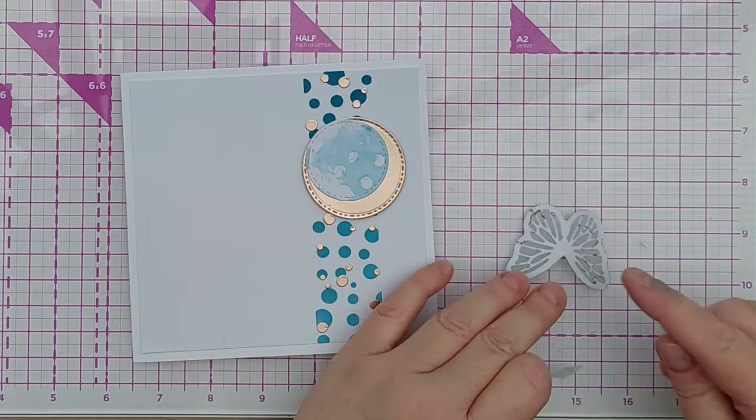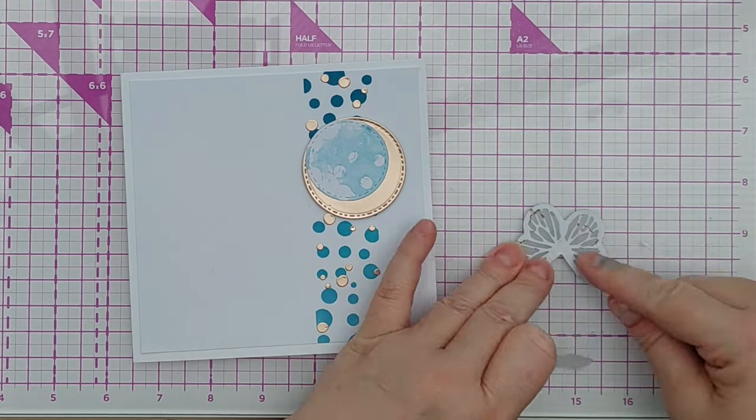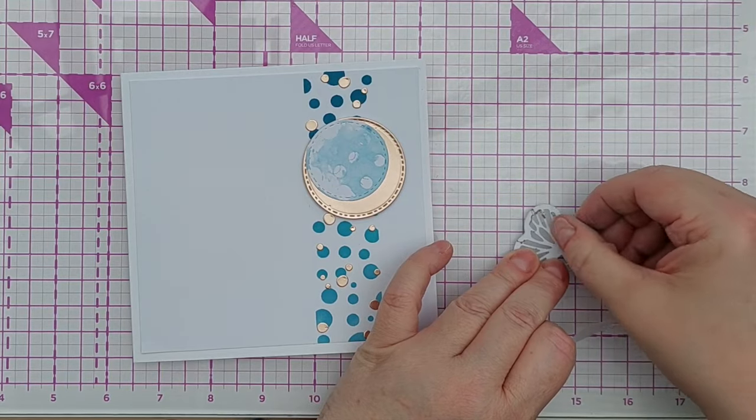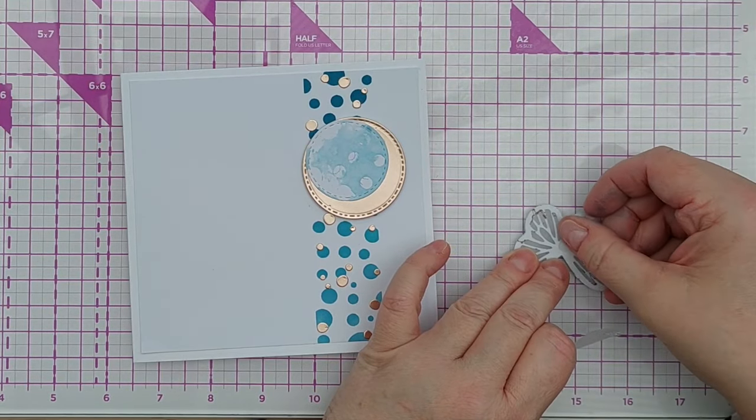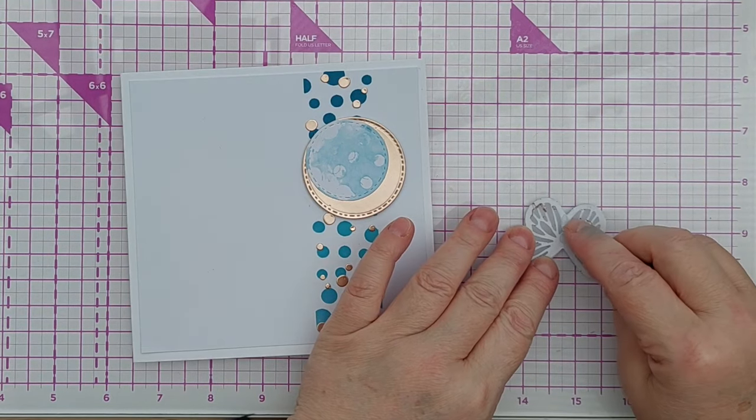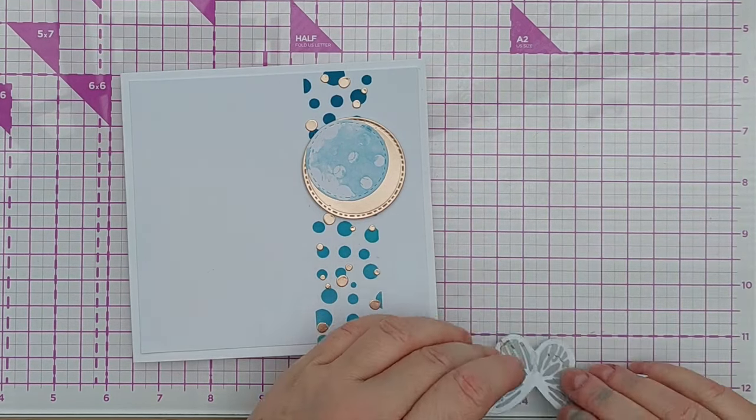To adhere my butterfly, I used some small glue dots behind the center of the body and stuck that onto the landing spot. I didn't put any under the rest of the wings because I wanted the wings to be able to lift up a bit so the butterfly looked like it was fluttering.